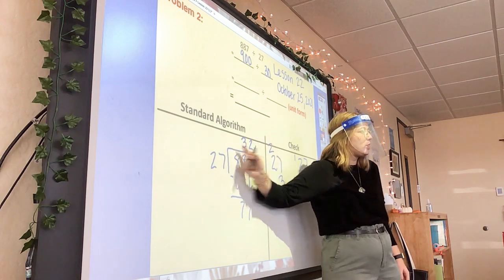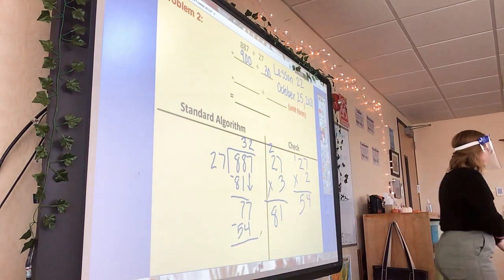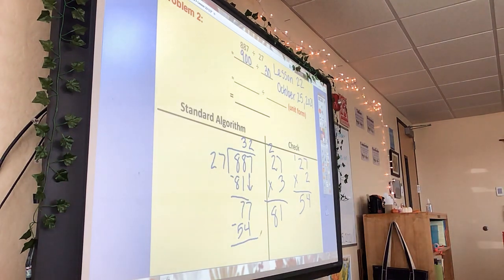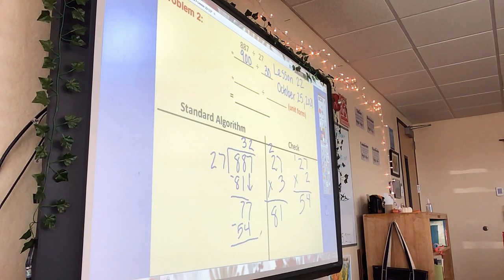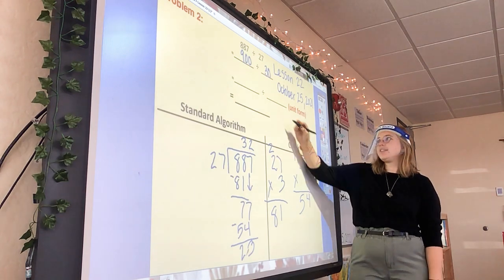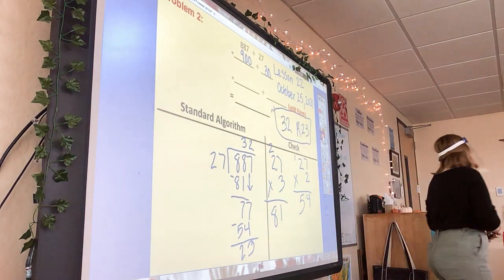What did you get for 77 minus 54? 23. Do I have anything else to bring down? No. So my answer is 32 remainder 23. Look at those wild numbers — they're all the same number.